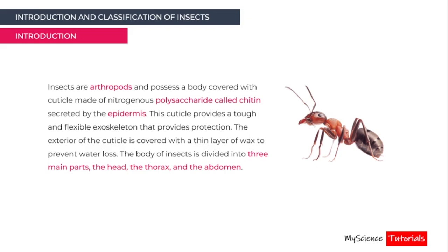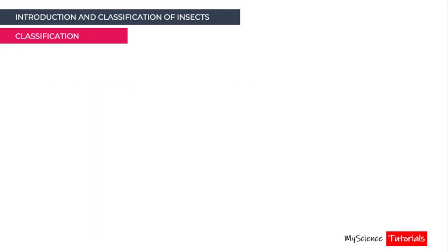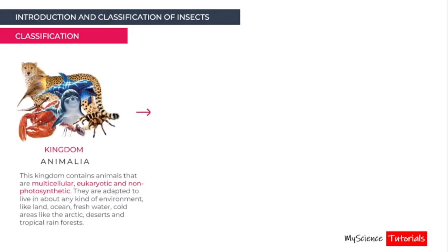Let's look at the classification of insects by kingdom, phylum, and class. Insects fall under Kingdom Animalia — one of the five kingdoms — which contains animals that are multicellular, eukaryotic, and non-photosynthetic. They are adapted to live in any kind of environment: on land, in the ocean, in freshwater, in cold areas like the Arctic, hot areas like the desert, or rainy areas like the tropical rainforest.